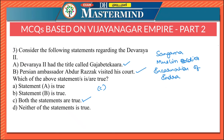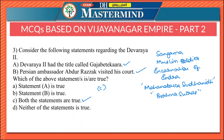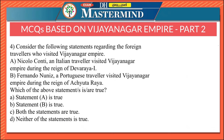Inscriptions speak of his title Gajabetekara, meaning 'the elephant hunter.' He wrote a book called Mahanataka Sudhanidi — this is important. Mahanataka Sudhanidi is a commentary on the Brahma Sutras of Badarayana. Persian ambassador Abdur Razak visited the court of Vijayanagara during the rule of Devaraya 2.